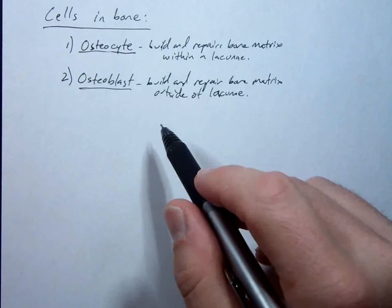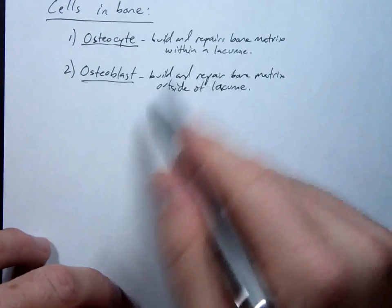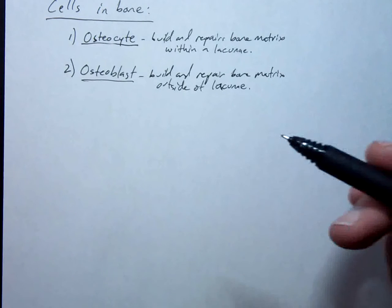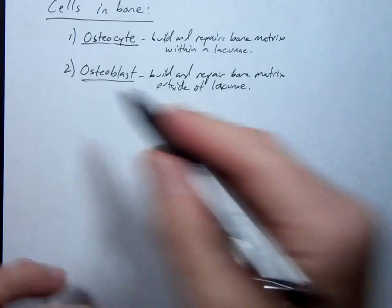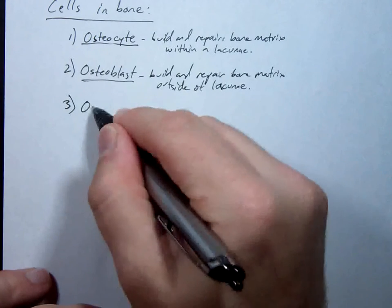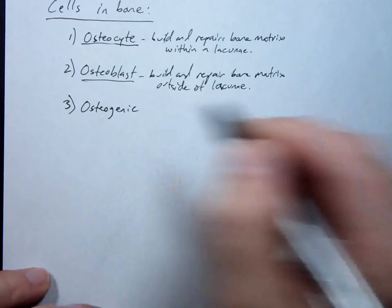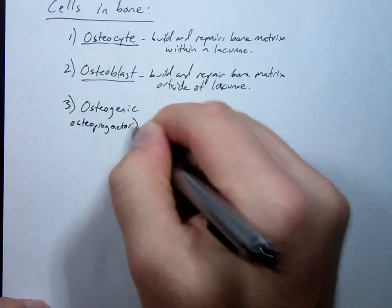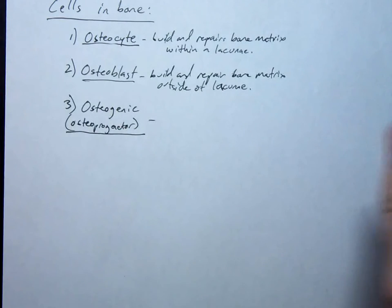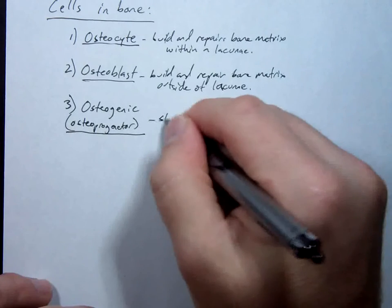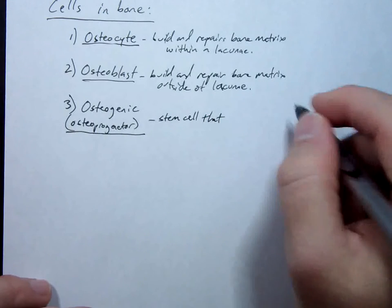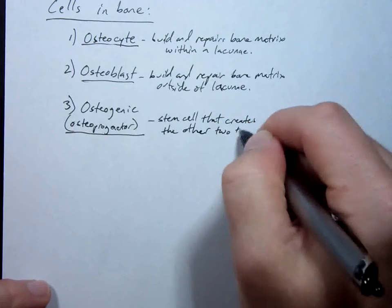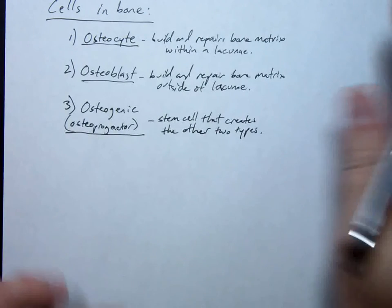If an osteoblast builds up bone matrix all around itself, it becomes an osteocyte. The third cell type is an osteogenic cell — also called osteoprogenitor depending on which textbook you use — it doesn't matter, it's the same cell. Osteogenic or osteoprogenitor is a stem cell that creates the other two types.